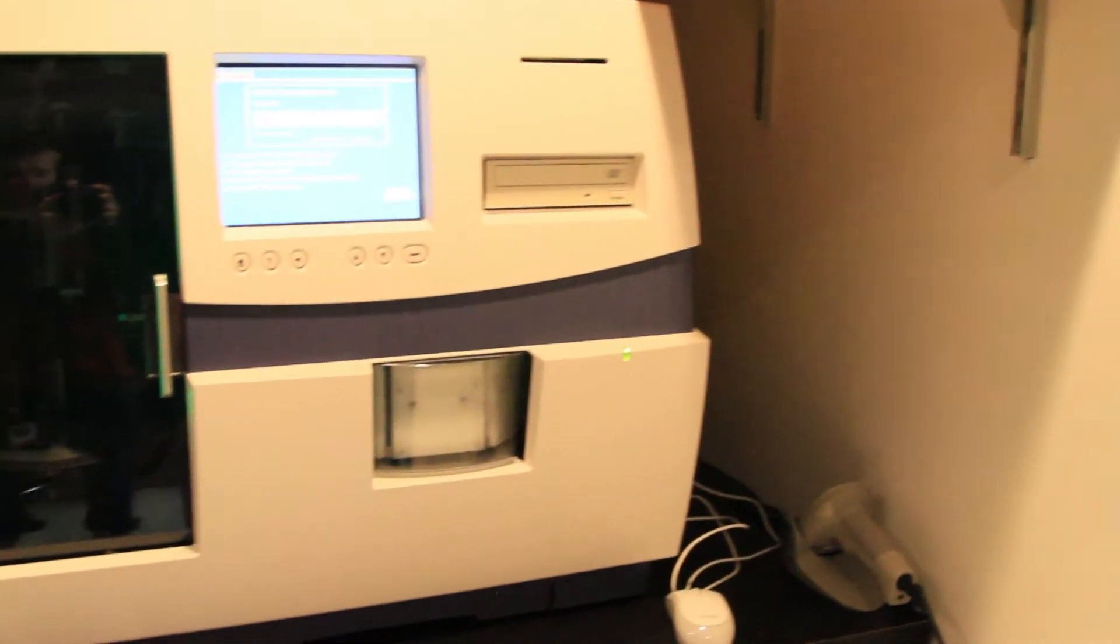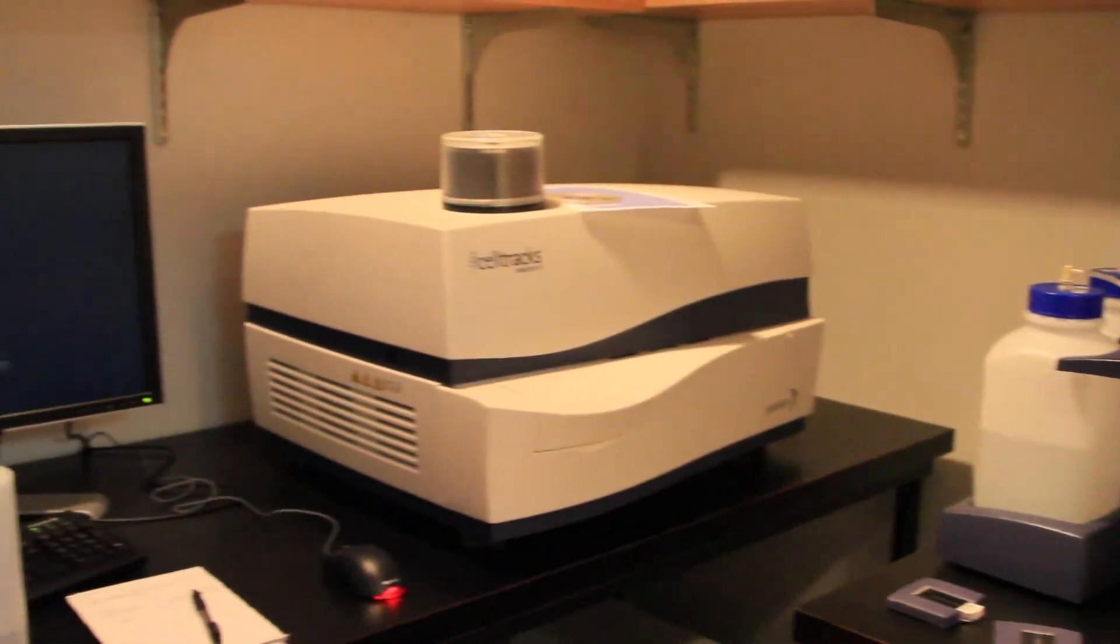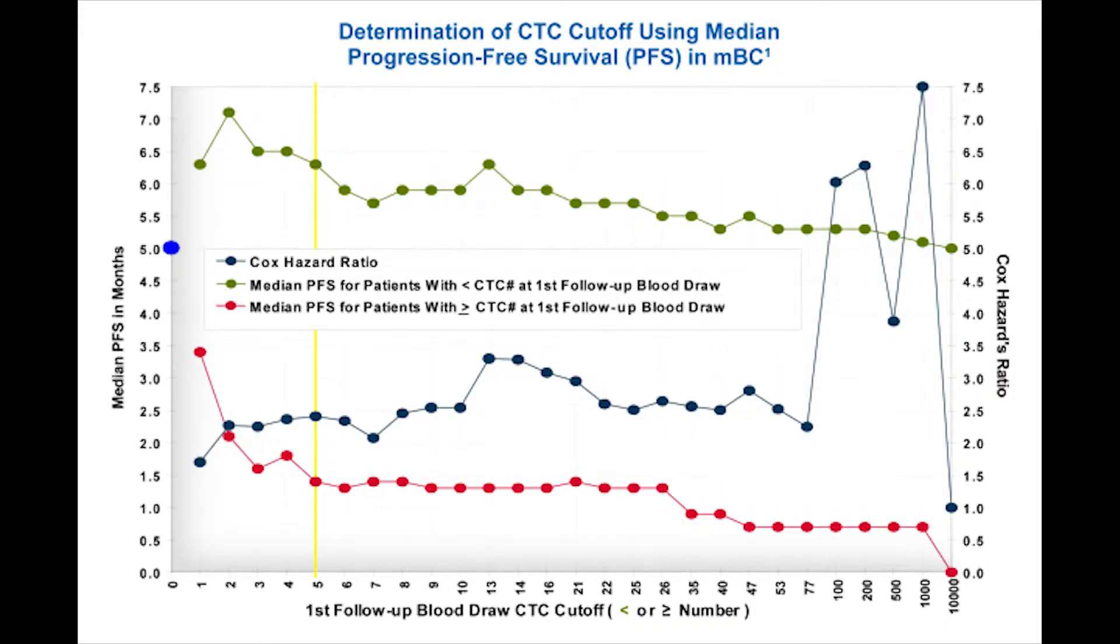Currently, the only FDA-approved CTC enumeration platform is the Veridex cell search system, which is comprised of bulky blood processing, staining, and fluorescent imaging equipment. High-risk patients are identified as having greater than 5 CTCs per 7.5 milliliters of blood.